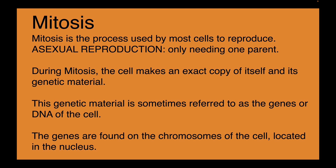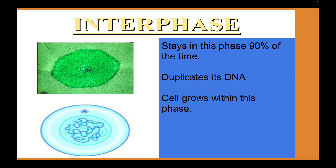The genes are found on the chromosomes of the cell, located in the nucleus. Interphase is the normal functioning part of the cell's cycle — the cell stays in this phase about 90 percent of the time. During this phase, the cell will duplicate its DNA, which is important because during mitosis the DNA will be split in half, so that half goes to one daughter cell and the other half to the other. Cell growth is also occurring during interphase.